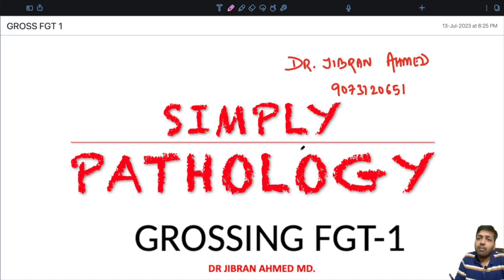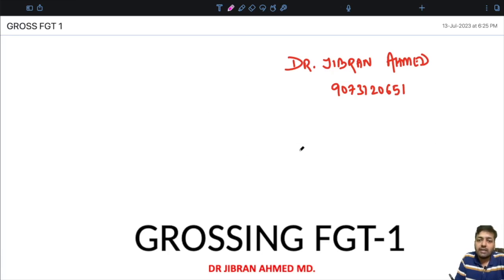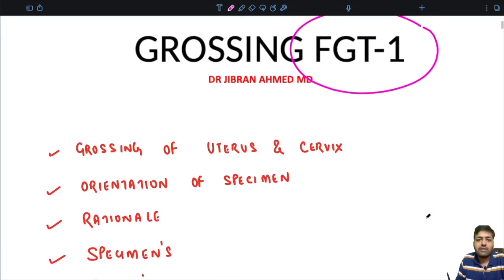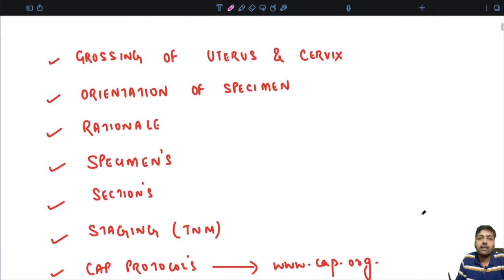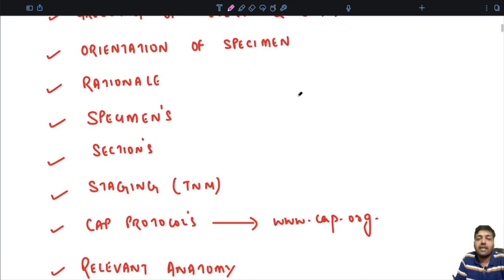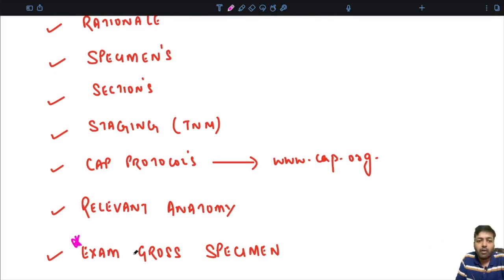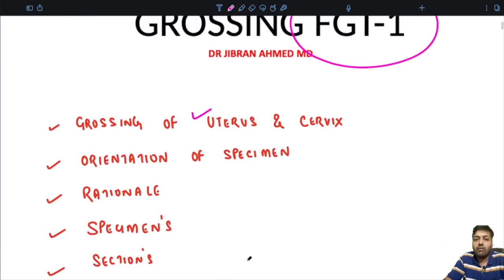I'm Dr. Gibran Amad presenting Simply Pathology. Today we are back with an important session. We are going to start with the grossing of the female genital tract, part 1. In the first part, we are going to discuss in detail about the grossing of the uterus and the cervix. Remember that the uterus and cervix is kept as an exam specimen, so it is a very important exam gross specimen. You should be very well versed with the uterus and cervix — what are the different parts and what is the relevant anatomy.